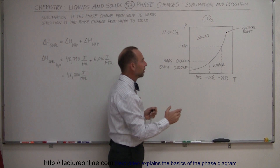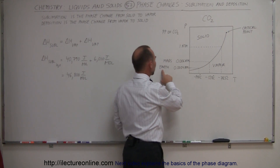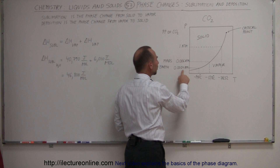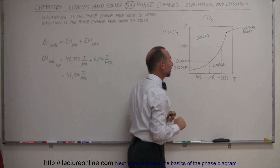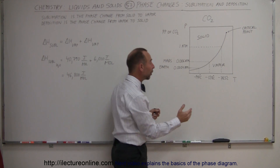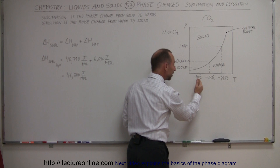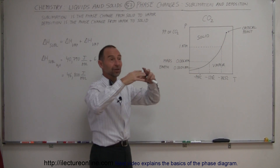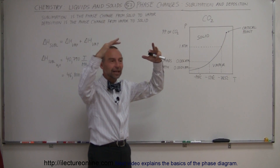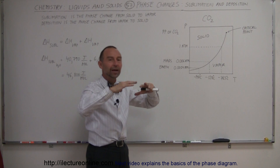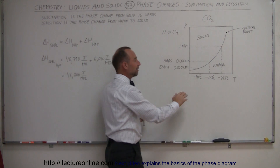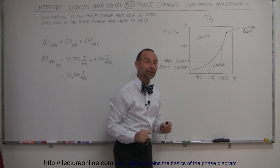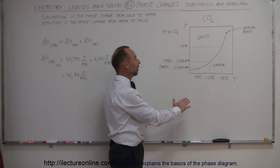But on Earth, the partial pressure of carbon dioxide is only 0.0004 atmospheres. So it would have to get down to 140 degrees below zero centigrade for the CO₂ vapor in the atmosphere to actually precipitate out like snow and fall to Earth. It never gets that cold anywhere on Earth — not even in the Antarctic.